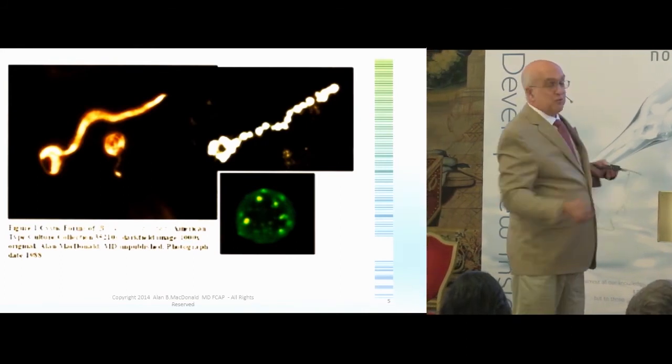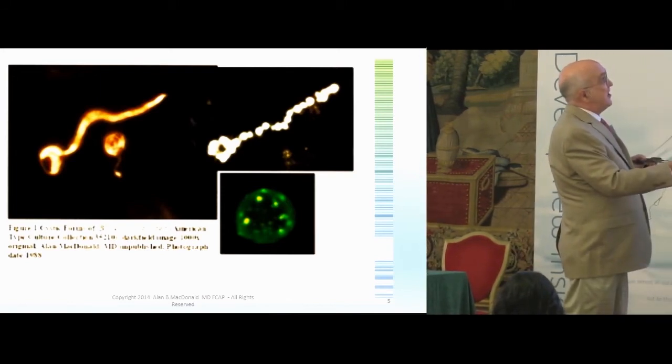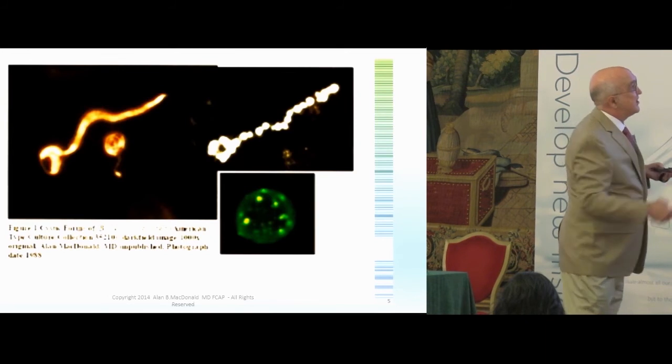Well, one of the other things that Borrelia do in unfavorable conditions is they segment, like sausages, and they become granular chains, like a pearl necklace.